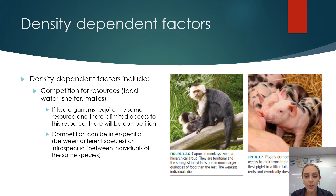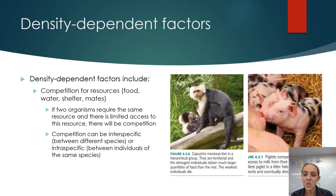The Capuchin monkeys on the right have a hierarchical social structure where the top individual gets the pick of territory, food, and resources, while the weakest ones die. They're very territorial animals, and that's an example of intraspecific competition. The more dense the population, the more effect that has.